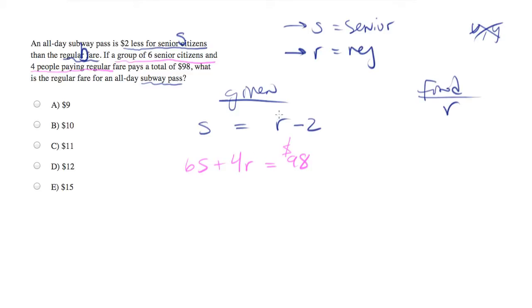What is the regular fare for an all-day subway pass? Well, in order to figure this out, we already have an equation here with two variables. So unfortunately, it's unsolvable as is. But we have another equation, and we can take what we have been given for the value of S and plug that in. So we know S is equal to R minus 2. I'm going to plug that in.